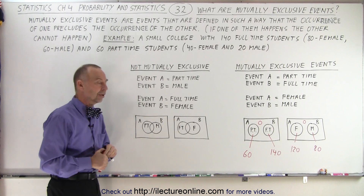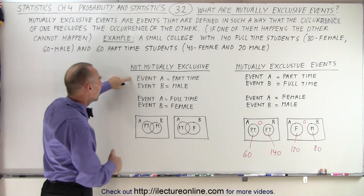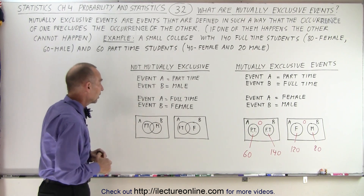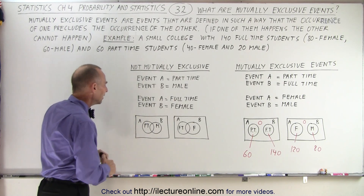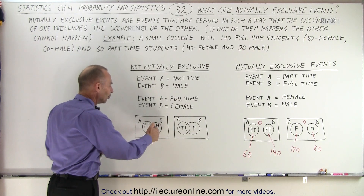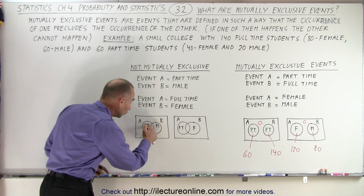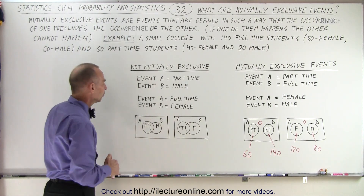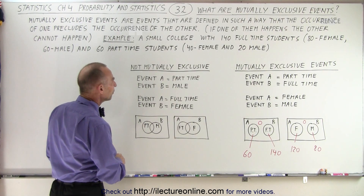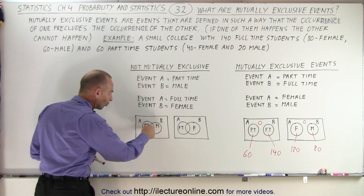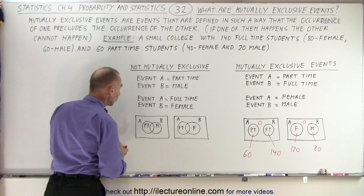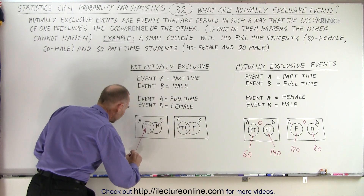But what if we have event A being part-time and event B being male? It is possible to be part-time and male in this particular college. In a Venn diagram, we have a circle representing part-time students and a circle representing male students, but they overlap because there's a number of students that can be both part-time and male. There are a total of 60 part-time students, but 20 of them are male. So in the rest of the circle where there's no overlap, we can only put the part-time students that are not male — the female students — so there would be 40 that fall into this category.